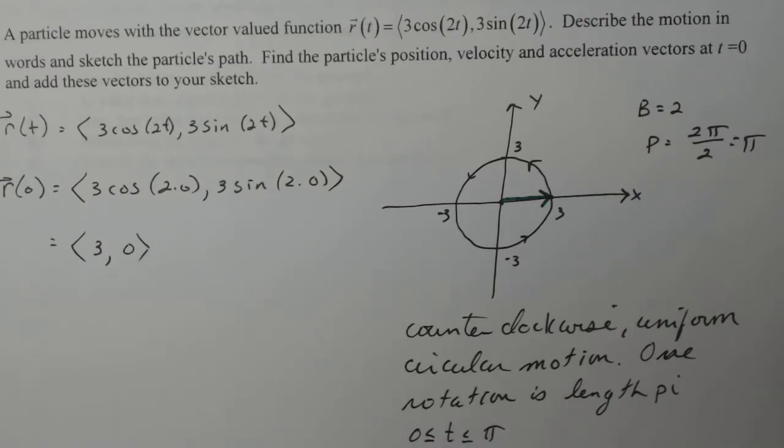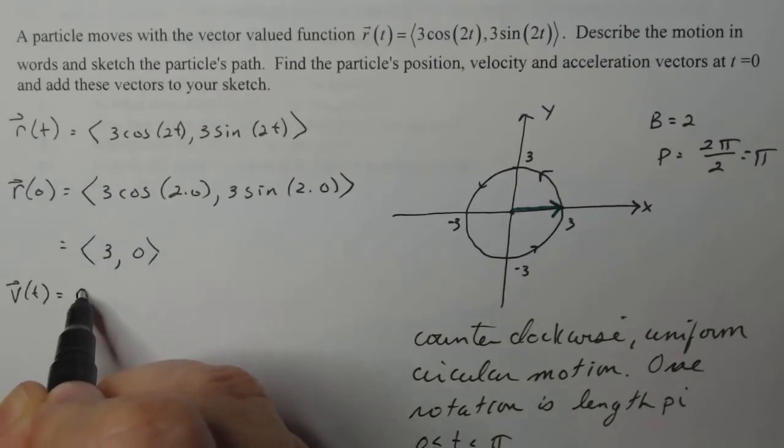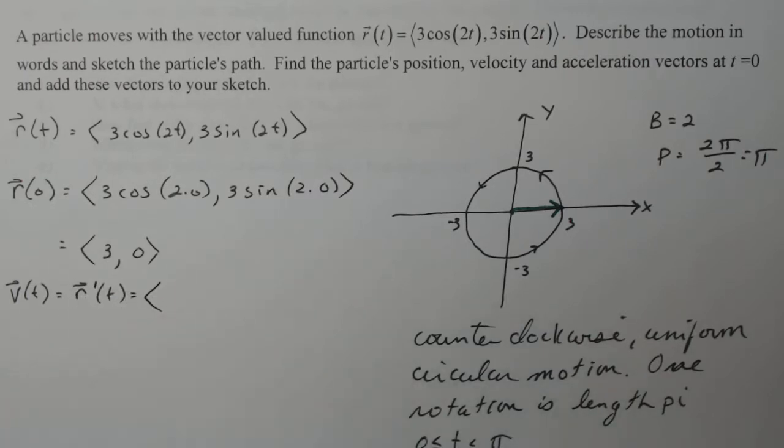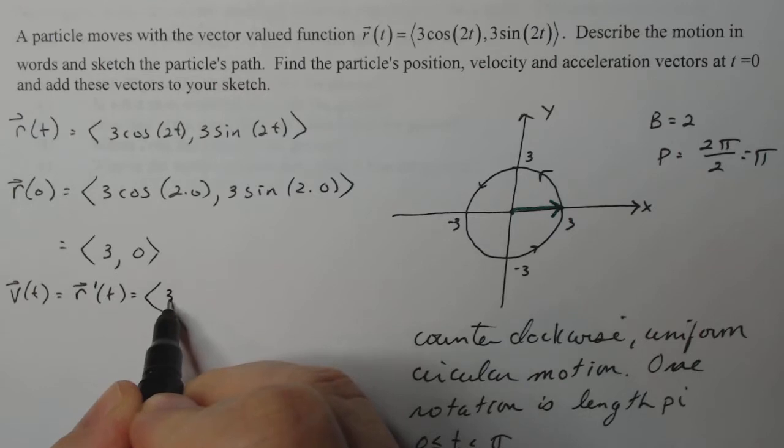So let's find velocity. My velocity vector in general for any t is just going to be r prime of t. And it's very convenient that if I want the derivative of my position, I just take the derivative of each of these pieces.